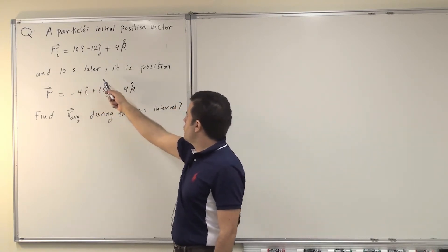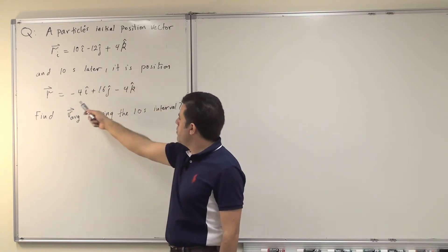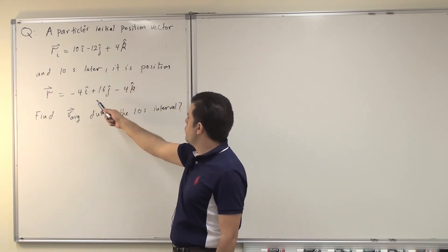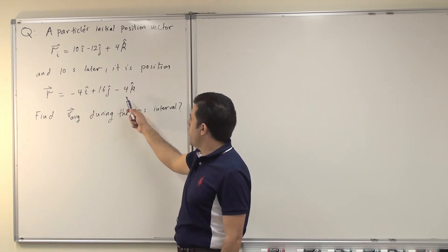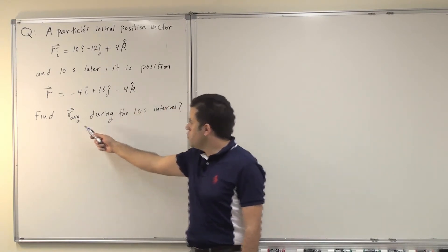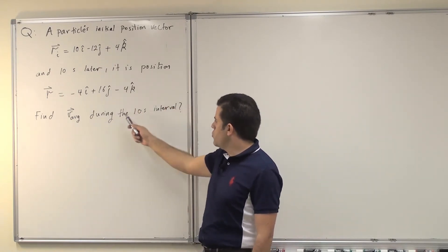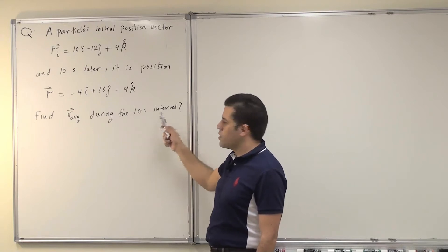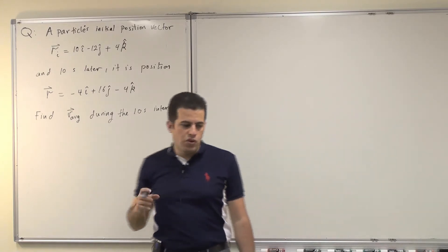And 10 seconds later, its position r equals minus 4i-hat, 16j-hat, minus 4k-hat. Find the average velocity, or v-average, during the 10-second interval.